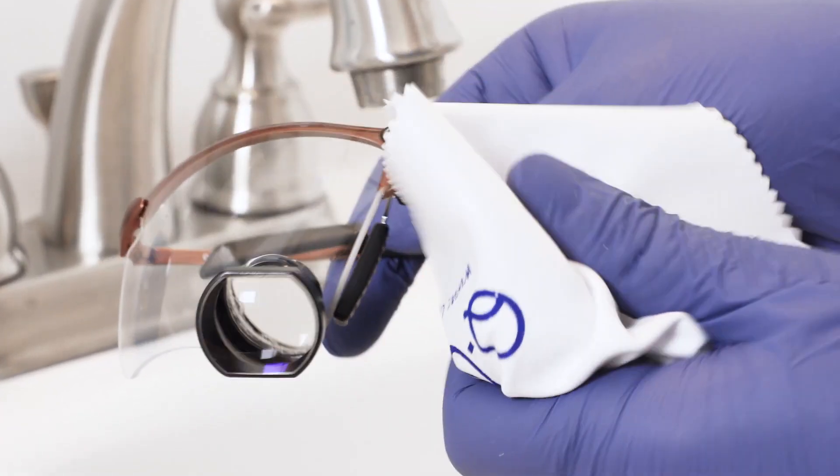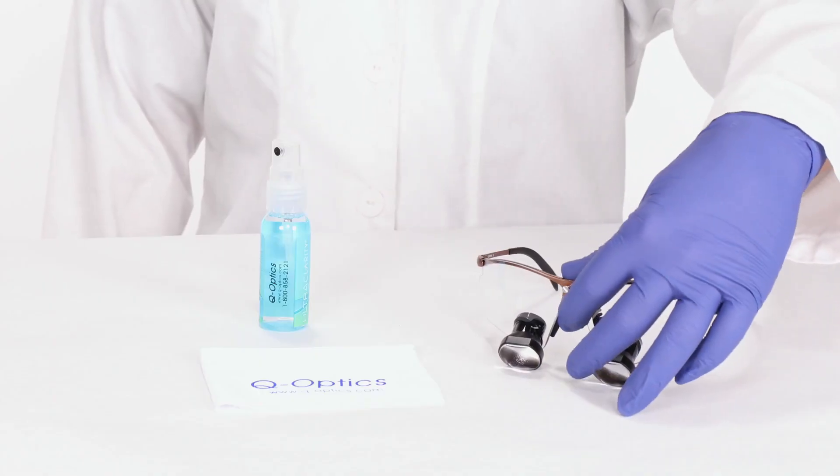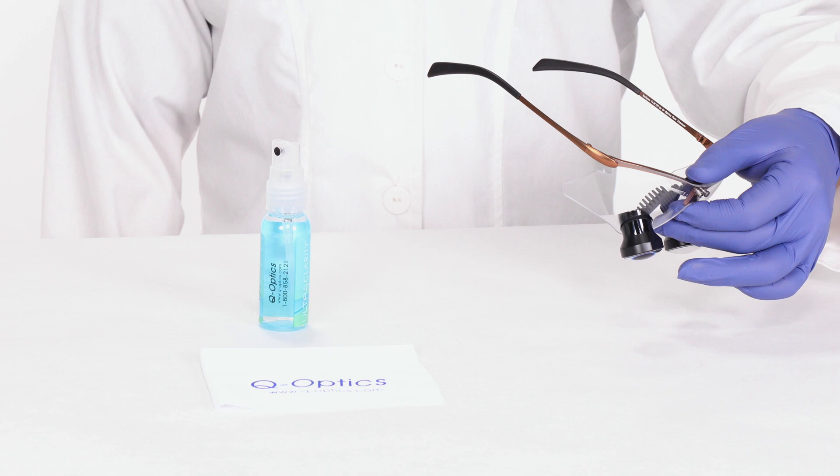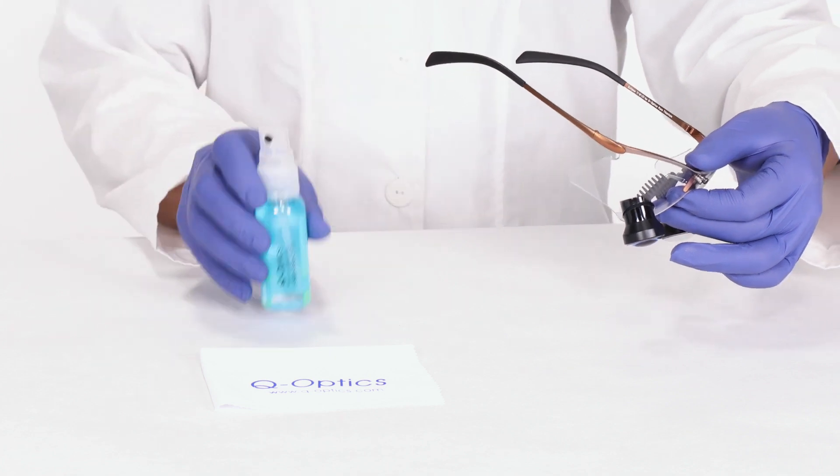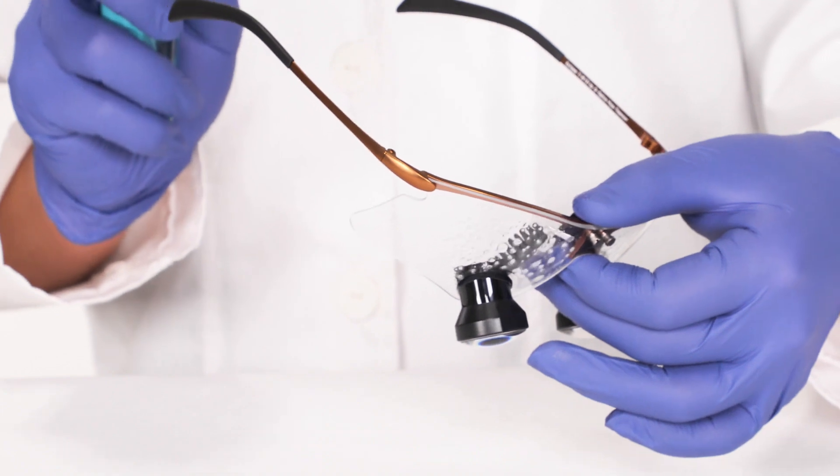Wipe the excess water off with a dry microfiber cloth. Then remove spotting or streaks by applying the optical spray either directly to the lenses themselves or to a microfiber cloth. Then wipe down your loops.